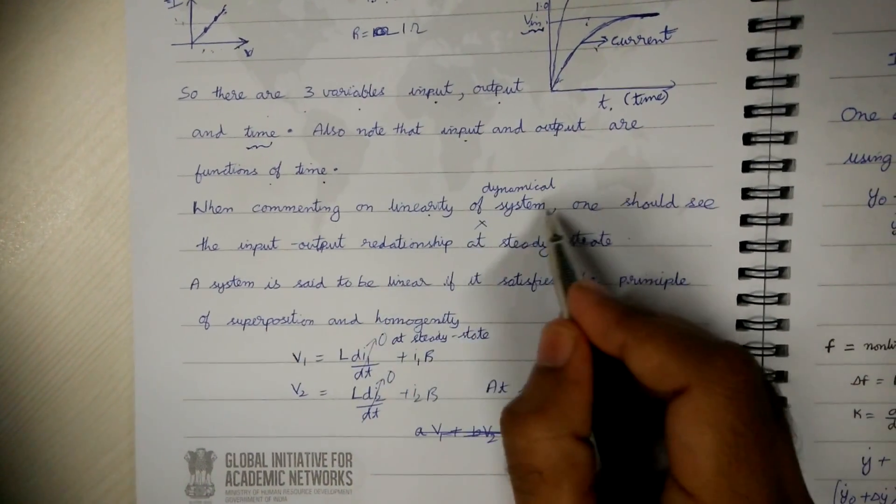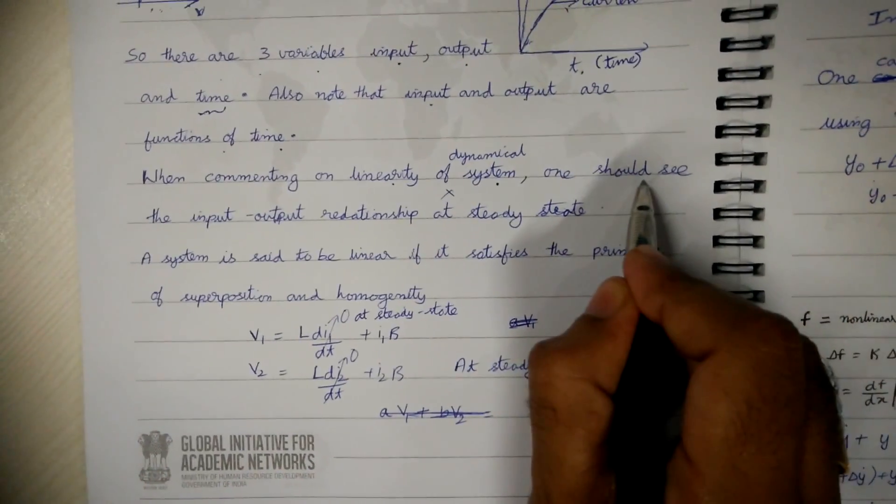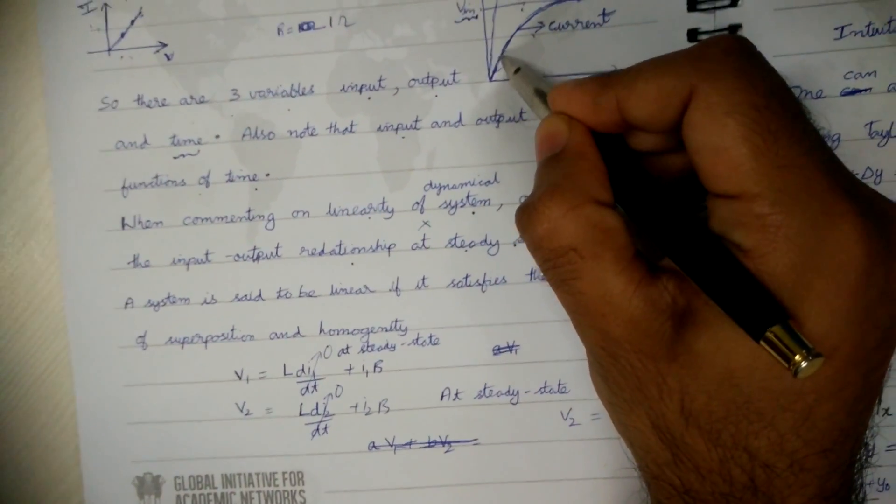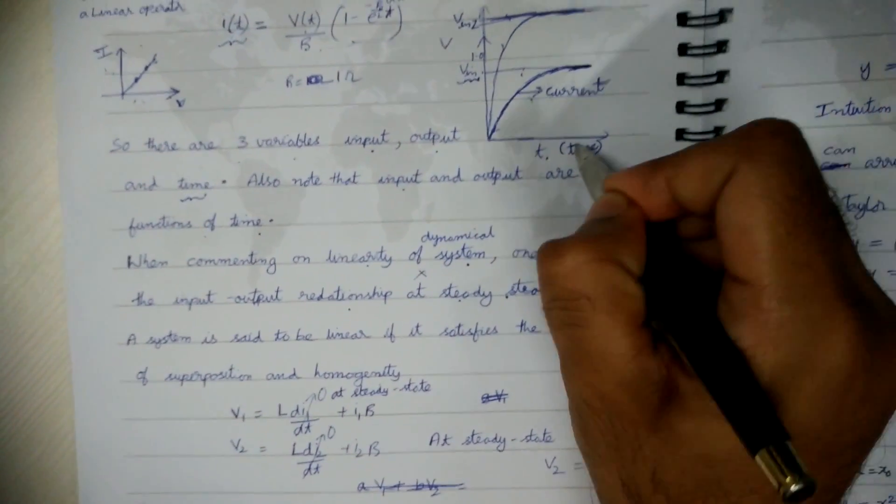So when commenting on linearity of dynamical systems one should see the input output relationship at steady state, not the curve with respect to time.